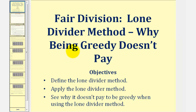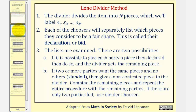Welcome to a lesson on why being greedy or dishonest doesn't pay when using the lone divider method. For review, if we have n players and we apply the lone divider method, step one: the divider divides the item into n pieces, labeled s sub one through s sub n, where each piece has the same value based upon the value system of the divider.